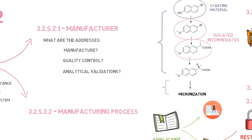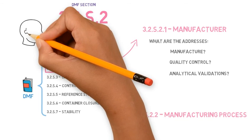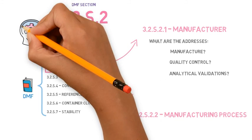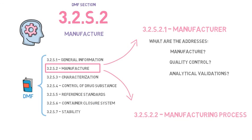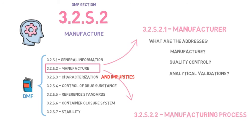Section 3.2.S.2 is one of the most critical sections of the DMF, because it is the basis to understand the potential impurities that may be present, which will need to have their control described in the section that follows.